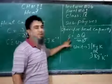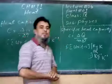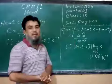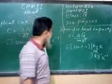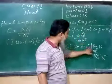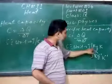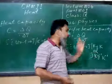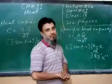Specific heat capacity is represented by small c, while heat capacity is represented by capital C. The formula is Q divided by m times delta T. In SI units, this is Joules per kilogram per Kelvin, written as J kg⁻¹ K⁻¹.